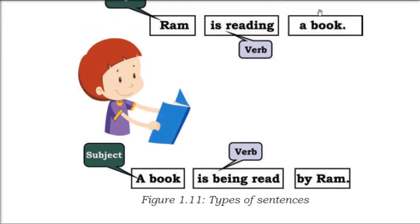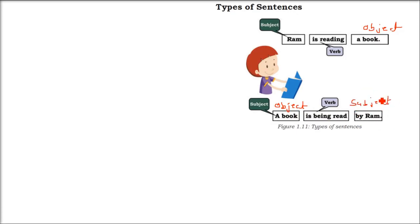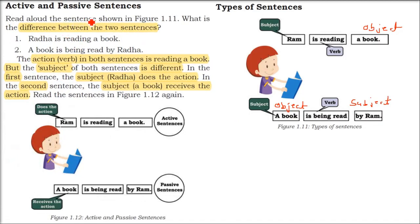When we change it: A book is being read by Ram. Now the book is the subject — the previous object has become the subject. The action is still reading, but now the object is receiving the action. In the first sentence, the subject does action on the object. In the second, the object gets the action from the subject. So we have active and passive sentences.